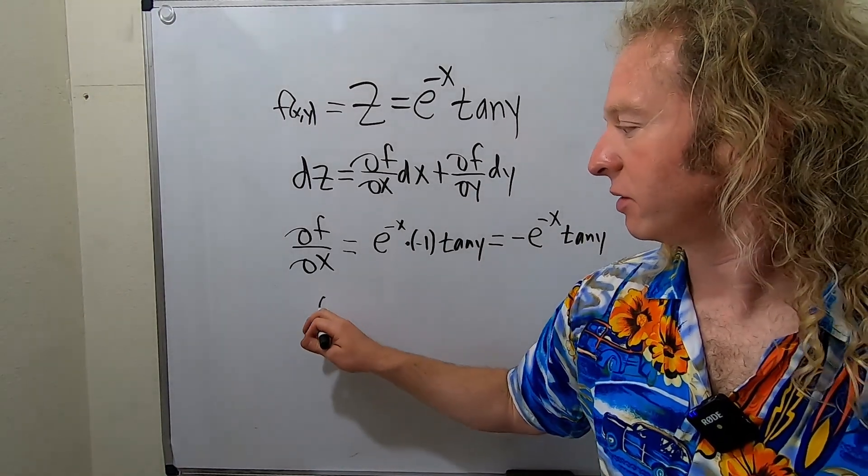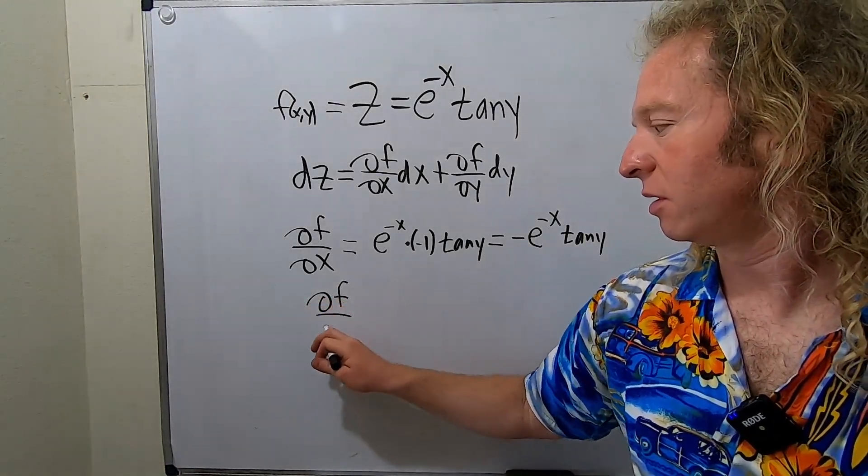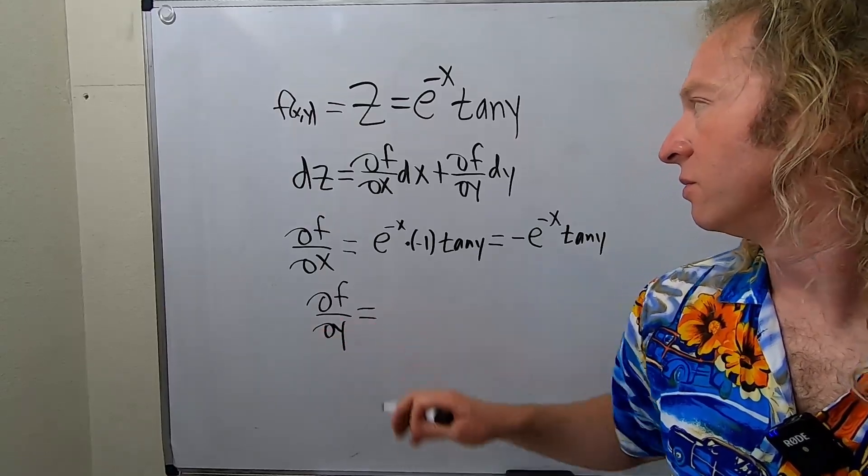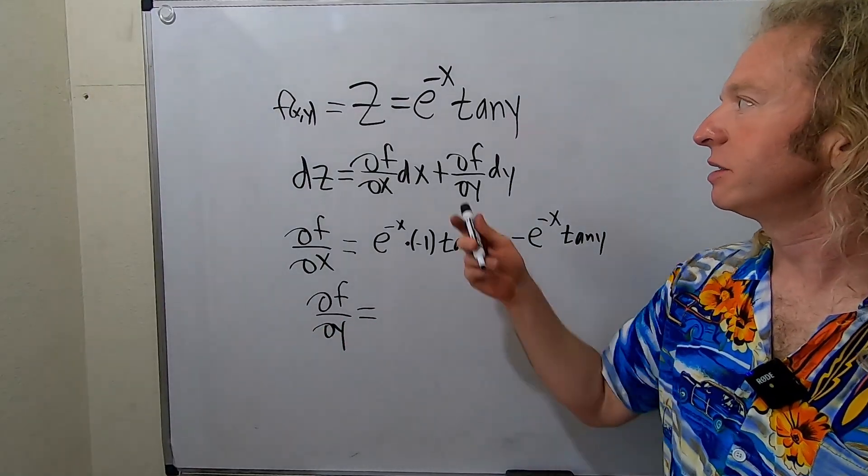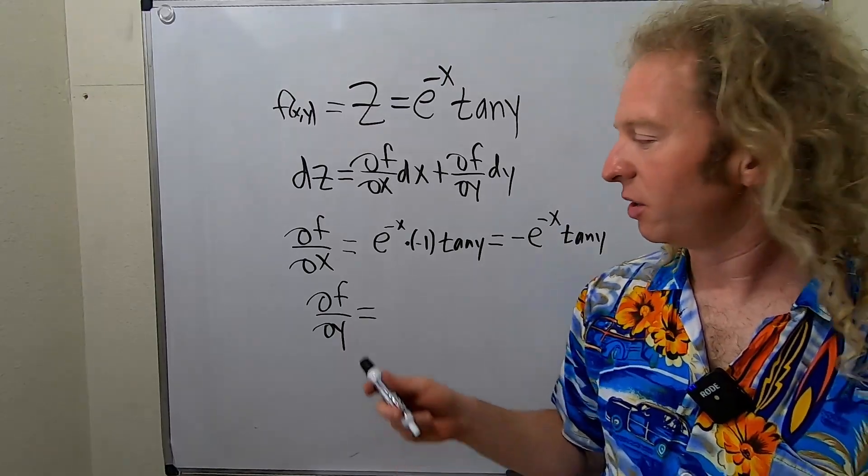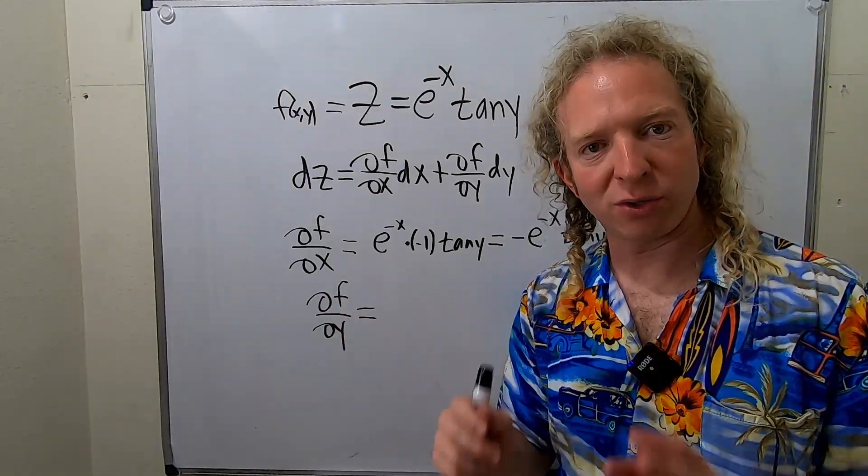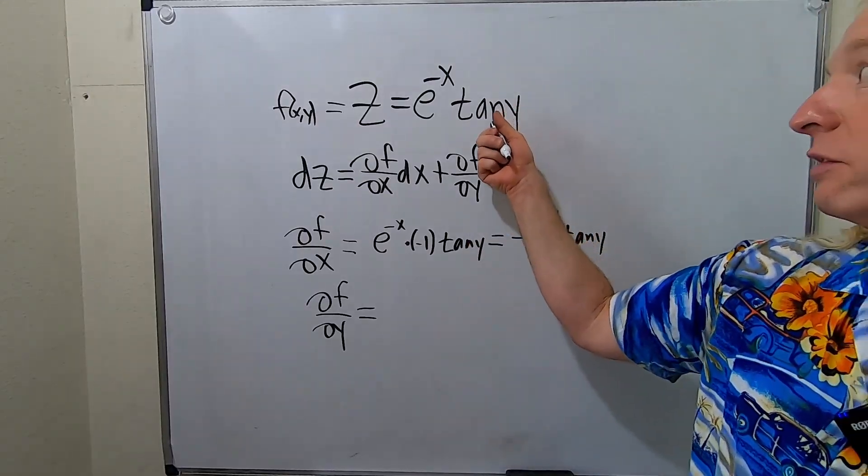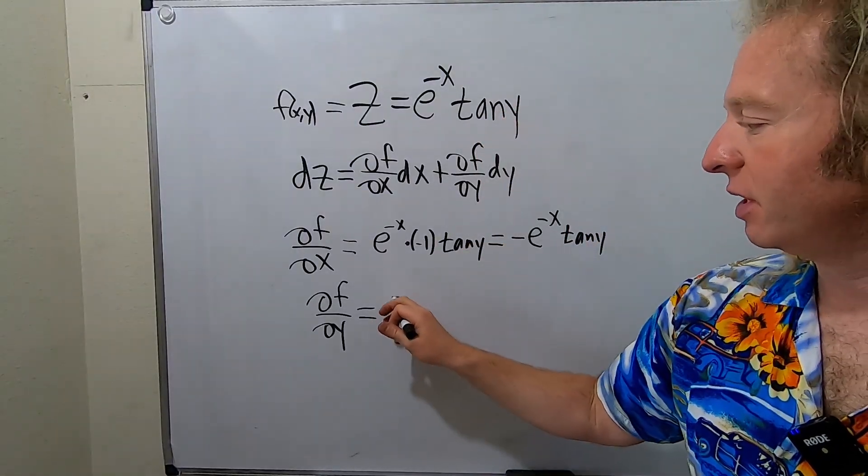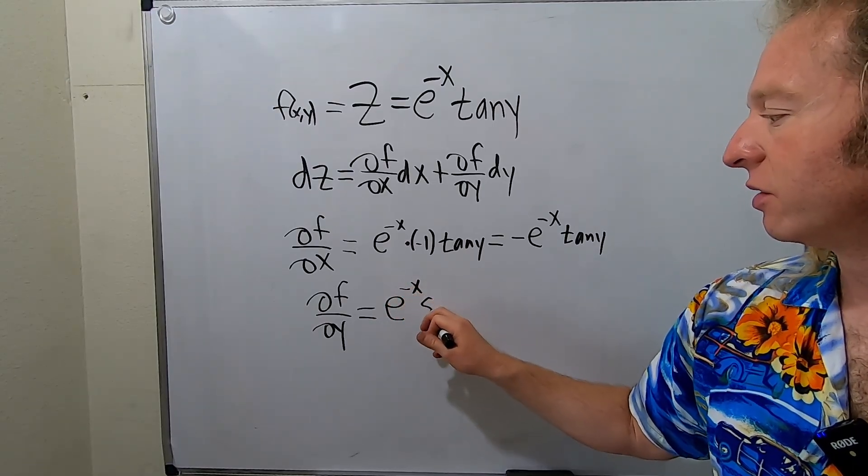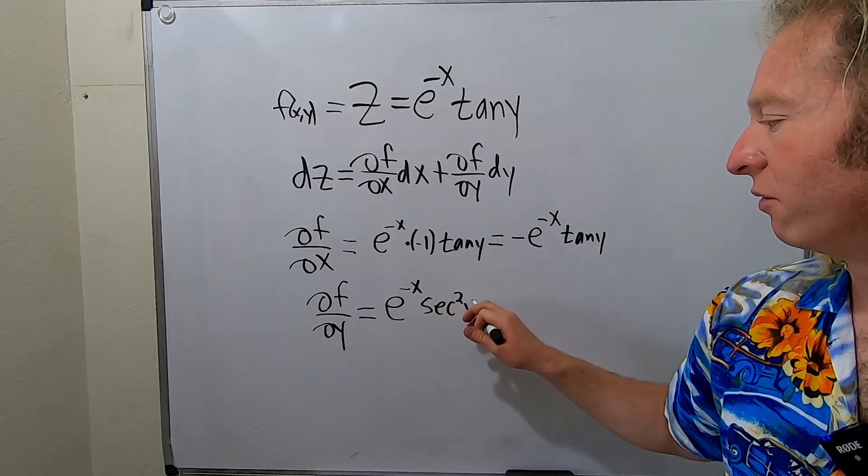Okay, let's work out ∂f/∂y. So what is this going to be? In this case, the e^(-x) is a constant. When you're computing a partial with respect to y, all of your x's are treated as constants. So the derivative of tangent is secant squared. So this will be e^(-x)sec²(y).